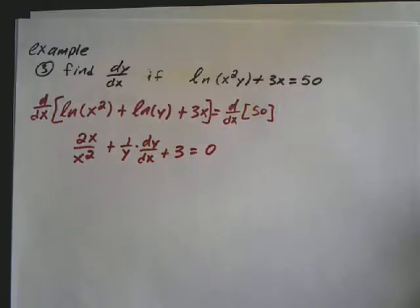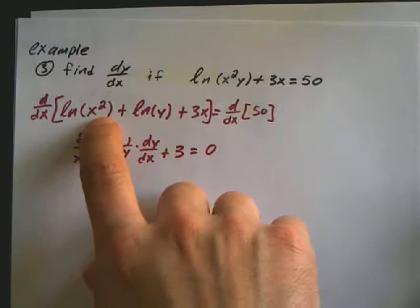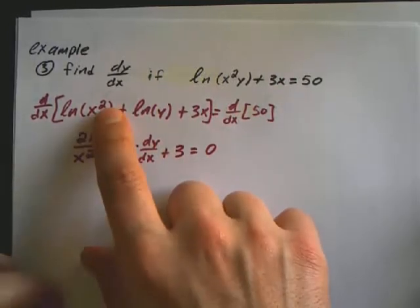Now you might be thinking, why didn't I simplify this over here? Why didn't I put this 2? And the reason is because as I was doing it, I didn't think about it. But you could have done that.